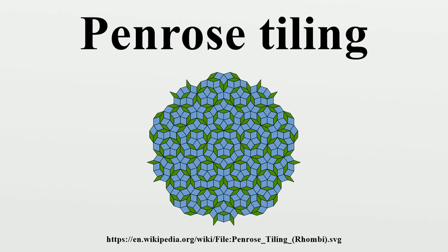The first Penrose tiling is also an aperiodic set of six prototiles, introduced by Roger Penrose in a 1974 paper, but is based on pentagons rather than squares. Any attempts to tile the plane with regular pentagons will necessarily leave gaps, but Johannes Kepler showed, in his 1619 work Harmonicis Mundi, that these gaps could be filled using pentagrams, decagons and related shapes.